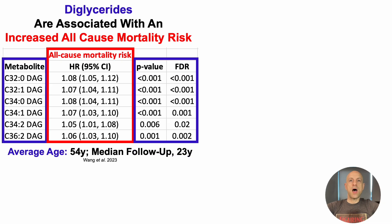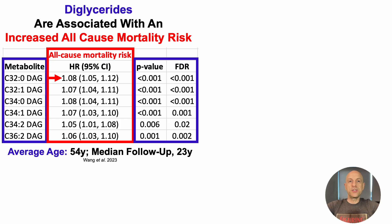We can see this in two ways. First, by looking at the p-value and the false discovery rate (FDR), which accounts for multiple comparisons. In both cases, p-value and FDR are less than 0.05, meaning all DAGs on this list are associated with a significantly higher risk of death for all causes. Second, looking at the hazard ratio with the 95% confidence interval: if those data are completely to the right of one — for example C32:0 is 1.05 to 1.12 — that is a significant association for increased all-cause mortality risk. The hazard ratio of 1.08 means 8% higher risk for relatively higher levels of that diglyceride. Going down the list, risk ranges from 5% to 8% for the diglycerides shown.